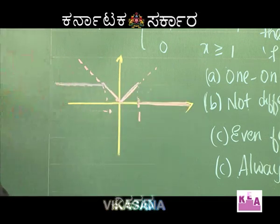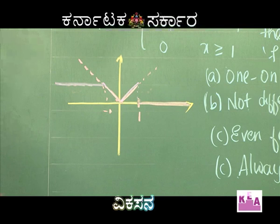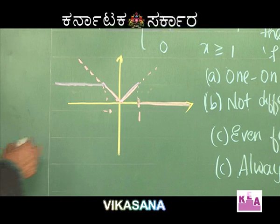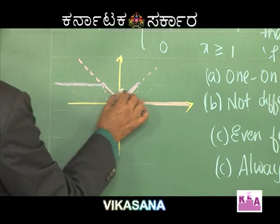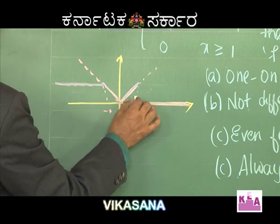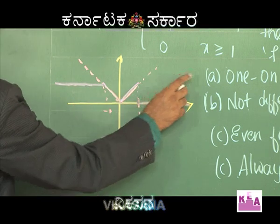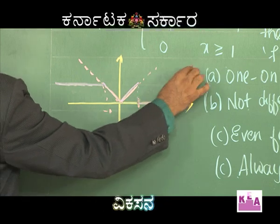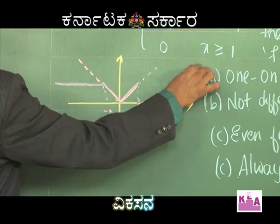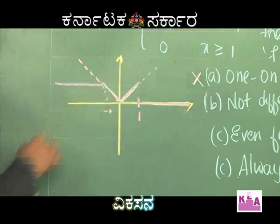Is f a one-one function? It is not, because if you draw a horizontal line parallel to the x-axis, it meets the graph at more than one point. Therefore, option A is false — the function cannot be one-one.